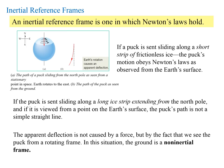An inertial reference frame is one in which Newton's laws hold. If a puck is sent sliding along a short strip of frictionless ice, the puck's motion obeys Newton's laws as observed from the Earth's surface. If you're on the Earth's surface covering a short distance, you see the puck going in a straight line.